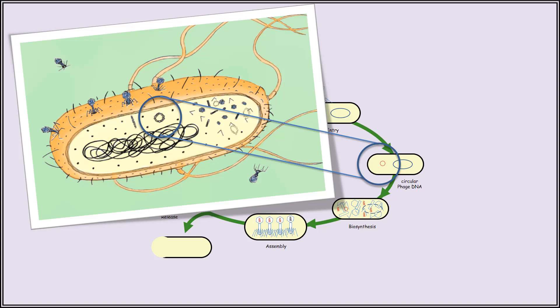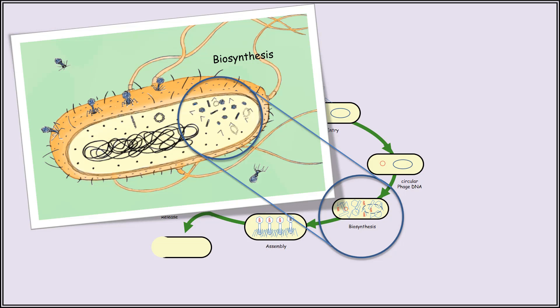Once inside the cytoplasm, the bacteriophage's DNA will immediately circularize upon itself, marking the beginning of the biosynthesis step. The viral genes are transcribed by the host's RNA polymerase, and the host's ribosomes will help translate this information to make bacteriophage capsid components. At the same time, the host's DNA polymerase uses the phage DNA as a template to make more copies of the phage genome. During this time, the host's resources — meaning its amino acids, nucleic acids, enzymes, energy, etc. — are mainly used to make more bacteriophage components.